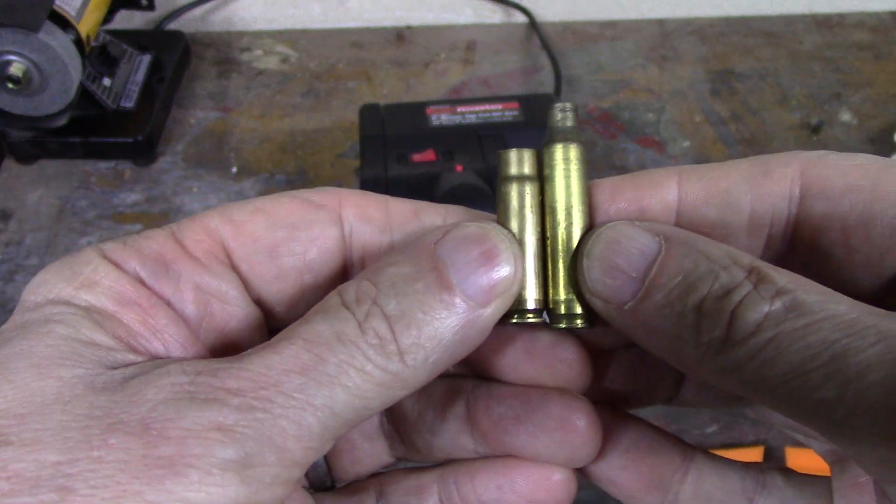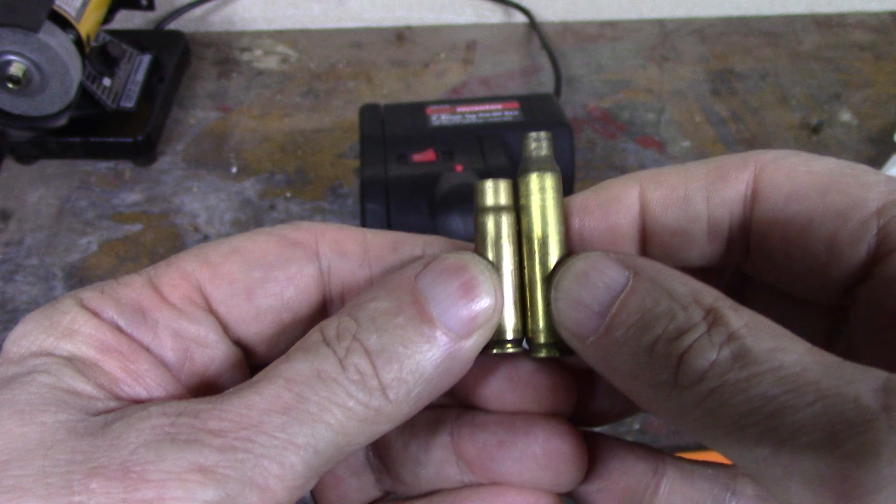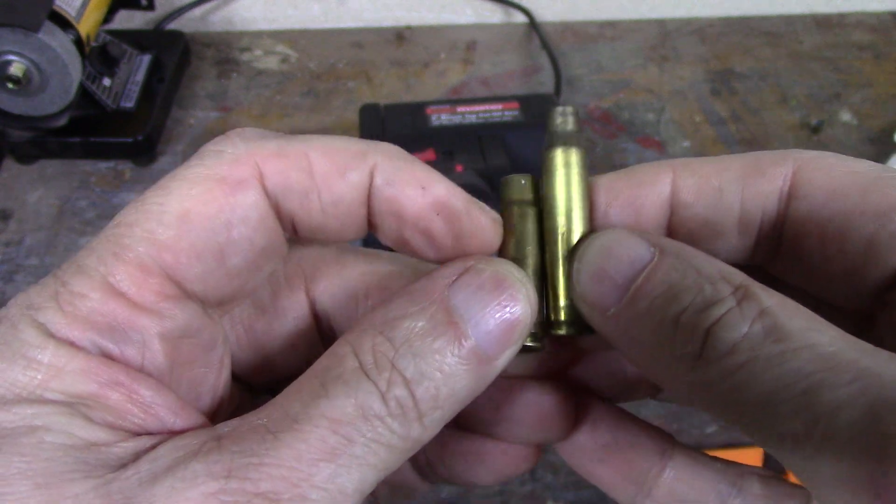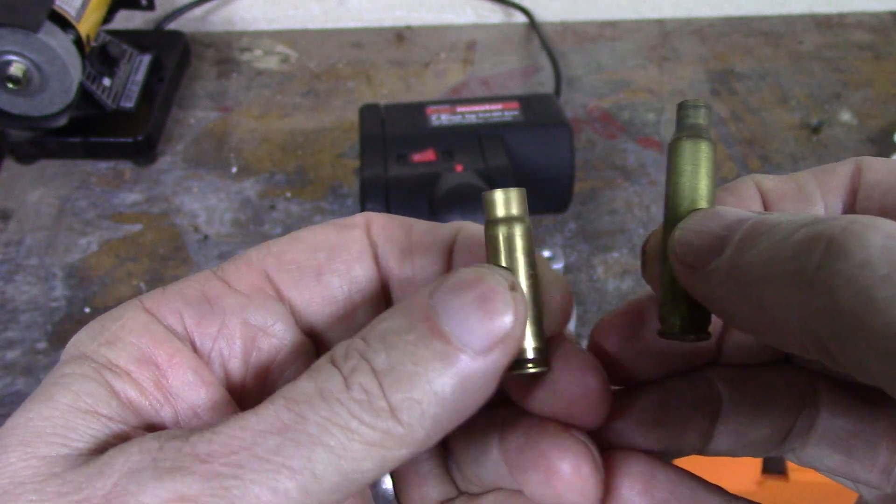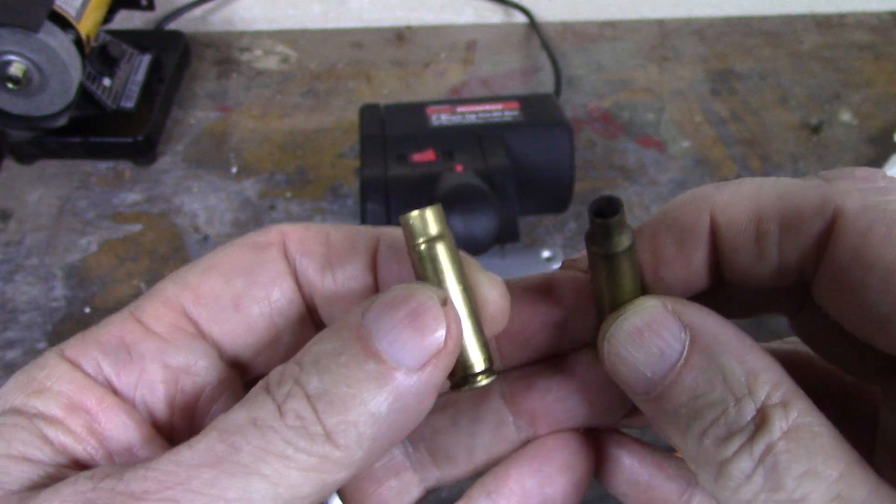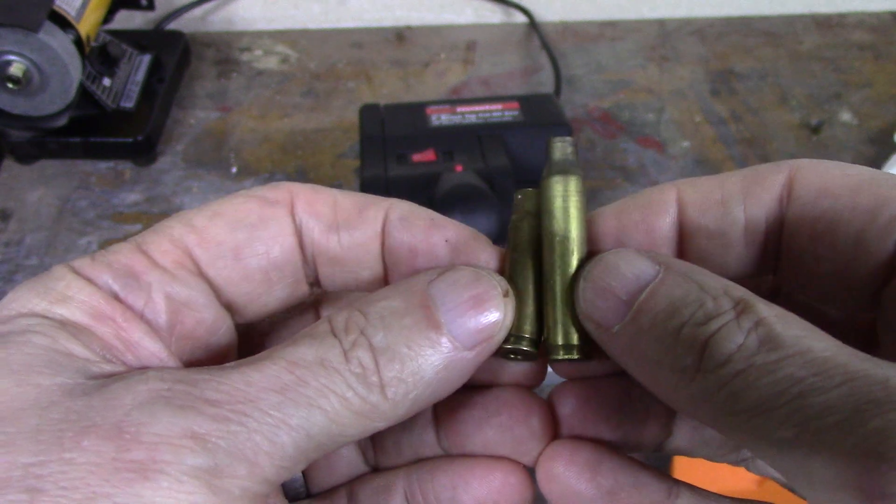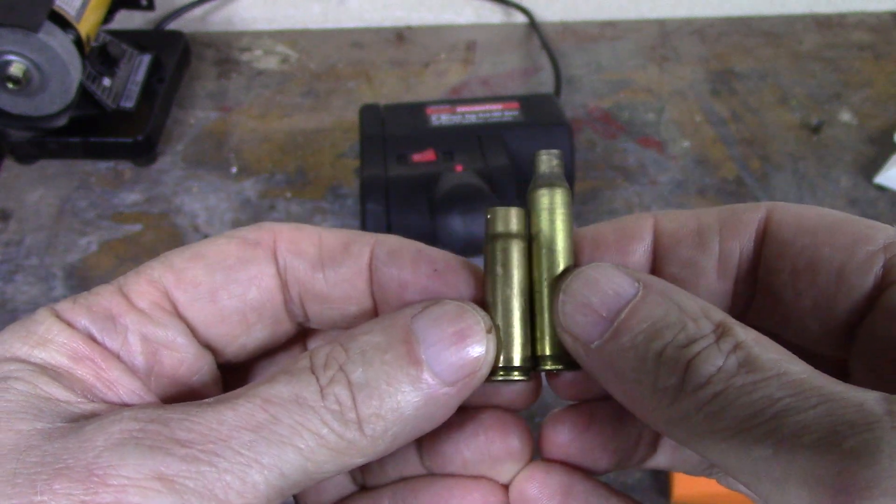You trim it off right at the shoulder, then use a sizing die to put another much smaller shoulder on it, and we can load in a quite long 30 caliber round instead of the 22 caliber round that goes in the 5.56 or .223.